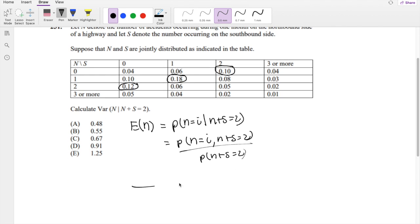Right, so what are our possible n values? Well, n can take the values 0, 1, 2, or 3 plus, but because 3 plus doesn't satisfy any of our conditions, we can just throw that away.